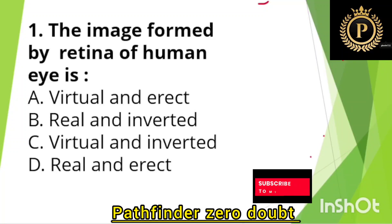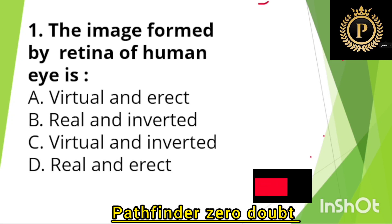The image formed by the retina of the human eye is — Option B: Real and inverted.